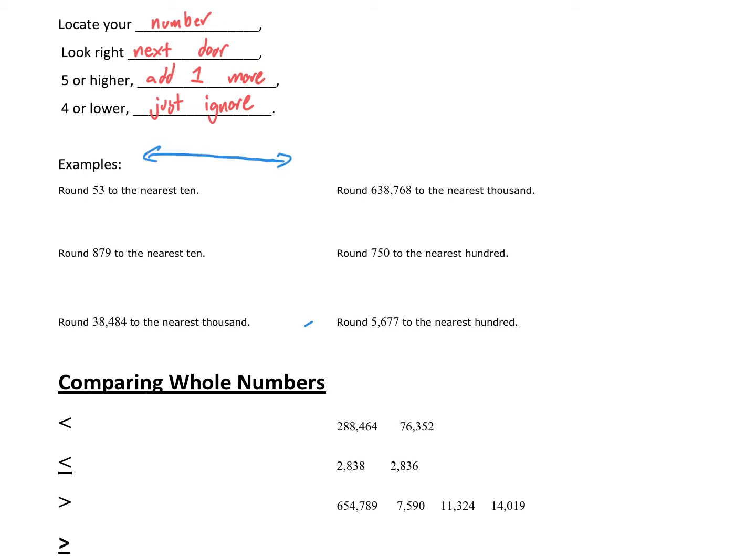We have this number 53. We're going to round it to the nearest ten. So if we have the number 50 here and the number 60 here, think about where 53 would be. 53 would be about right here. Is 53 closer to 50 or 60? Well, it's clearly closer to 50.